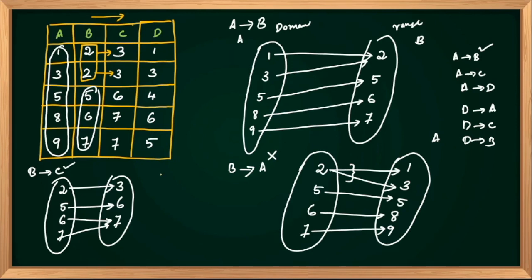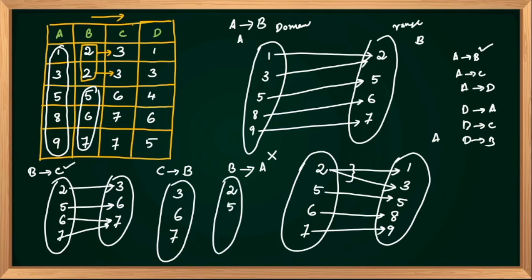Now let's check C gives B. C has values 3, 6, 7. B has values 2, 5, 6, 7. So: 3 maps to 2, 6 maps to 5, 7 maps to 6, and 7 also maps to 7. Since 7 in C maps to both 6 and 7 in B, C gives B is not a function. Therefore, C gives B is not a functional dependency.